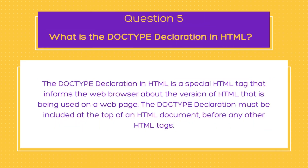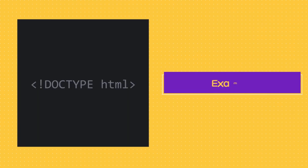The final question in today's list is: what is the DOCTYPE declaration in HTML? The DOCTYPE declaration is a special HTML tag that informs the web browser about the version of HTML being used on a web page. It must be included at the top of an HTML document before any other HTML tags. It ensures the browser displays the page correctly and in accordance with the HTML specification. Different versions of HTML have different rules, so it's essential to include the correct DOCTYPE. Here is an example of the DOCTYPE declaration for HTML5.